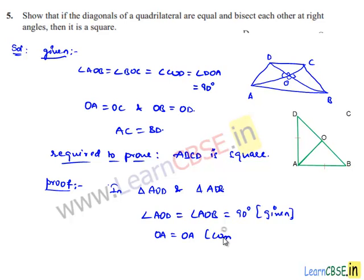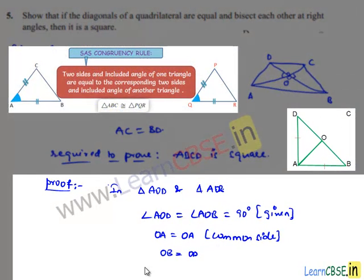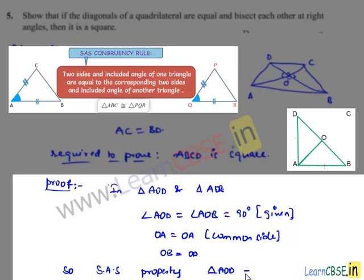OA will be the common side for both the triangles, so that will be equal in both triangles. Also OD is equal to OB as BD is bisected at O. Therefore by SAS property of congruency we can say triangle AOD is congruent to triangle AOB.